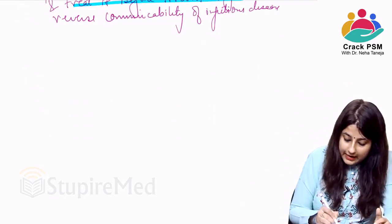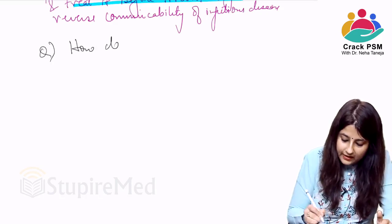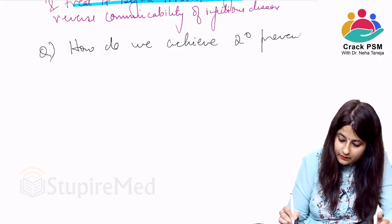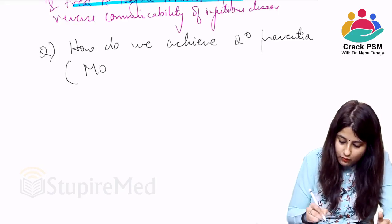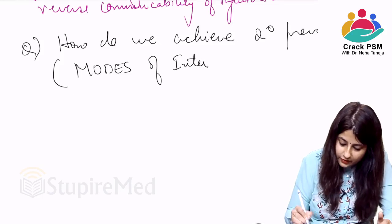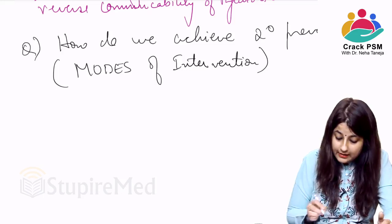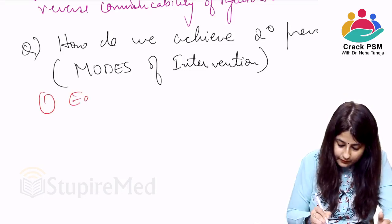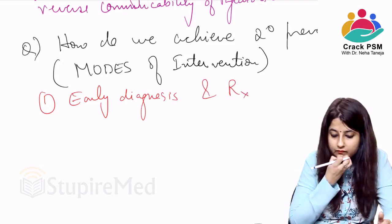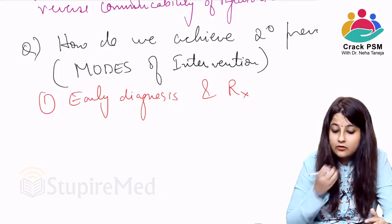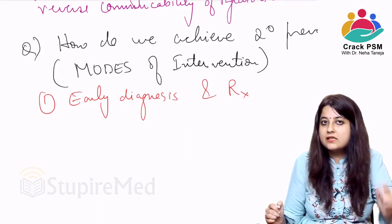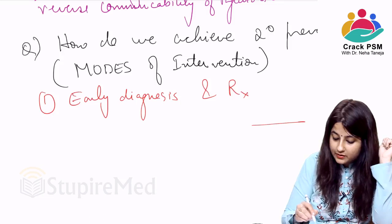How do we achieve secondary prevention? The modes of intervention are: number one, early diagnosis and treatment. How do we make an early diagnosis? If you remember the iceberg phenomenon of disease, only the tip of the iceberg represents clinical cases in the community.